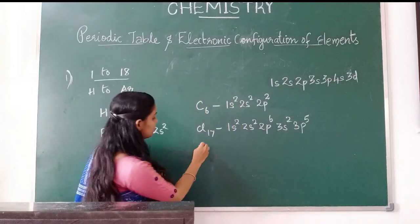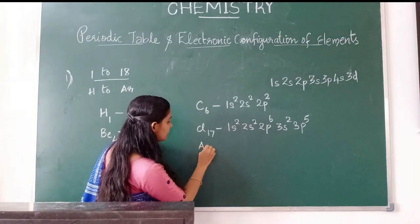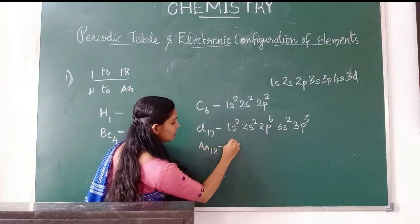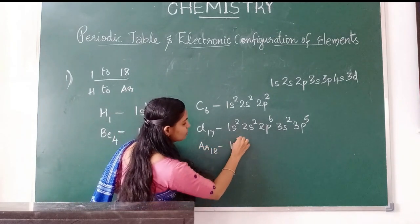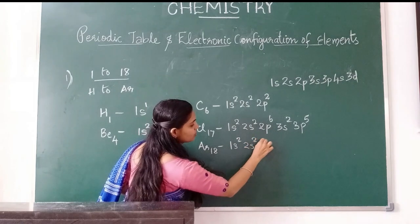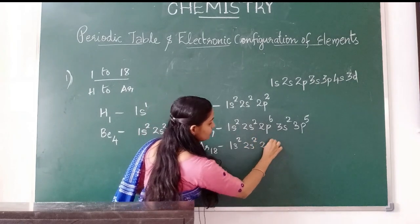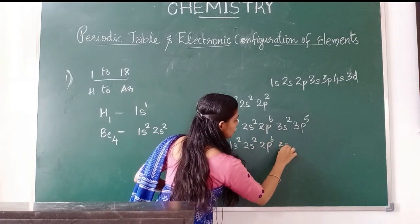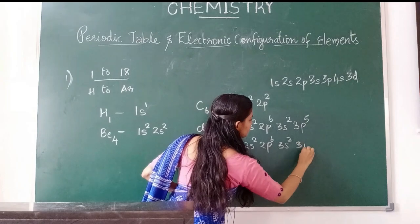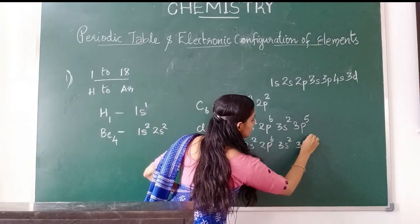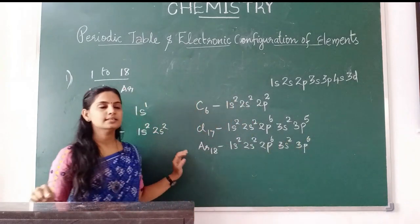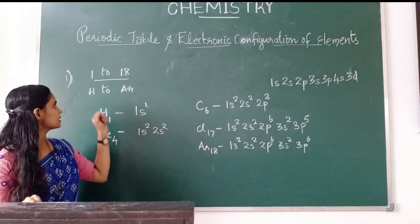Last example: argon, atomic number 18. Electronic configuration: 1s2, 2s2, 2p6, 3s2, 3p6. This is the first category — elements of atomic number 1 to 18, hydrogen to argon.